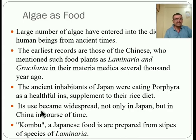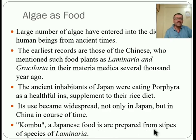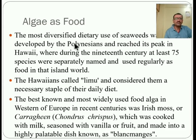Its use became widespread not only in Japan but also in China. Kombu is a Japanese food prepared from species of Laminaria. The most diversified dietary use of seaweed was developed by the Polynesian peoples and reached its peak in Hawaii, where during the 19th century at least 75 species were separately named and used regularly as food.